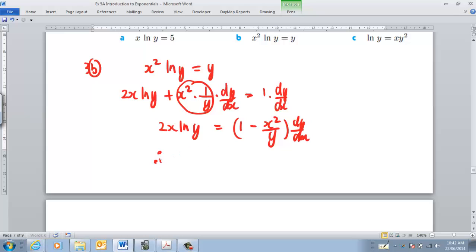So therefore, our dy dx is going to be equal to 2x ln y all over 1 minus x squared all over y. Done and finished.